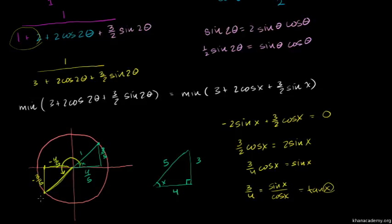When cosine and sine are both negative, it's the third quadrant where the minimum occurs. The minimum is when sine is negative 3 over 5 and cosine is negative 4 over 5.